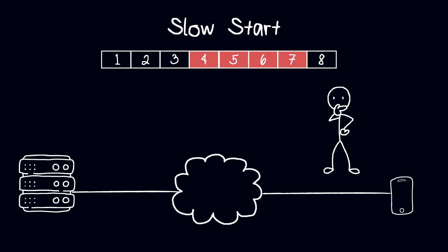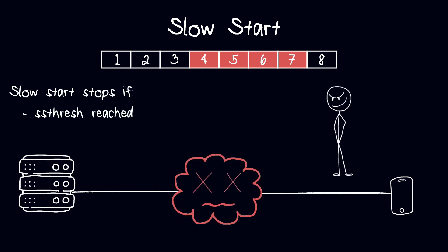As you might be thinking, this aggressive growth cannot continue forever, or else we would kill the network. This growth stops if either a threshold called the congestion avoidance threshold is reached, for example 65 kilobytes, or if a network congestion is detected.